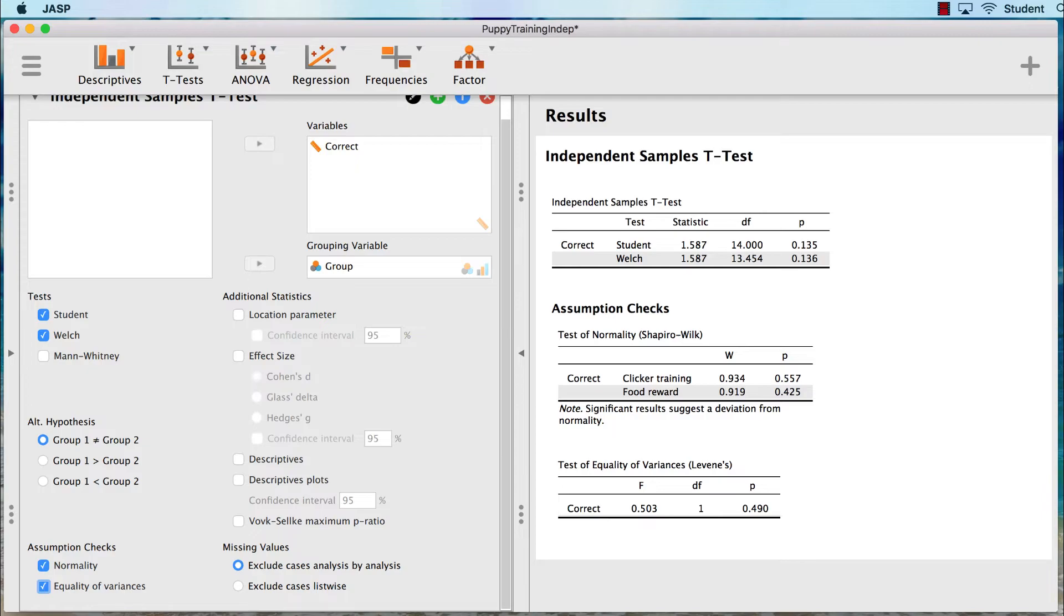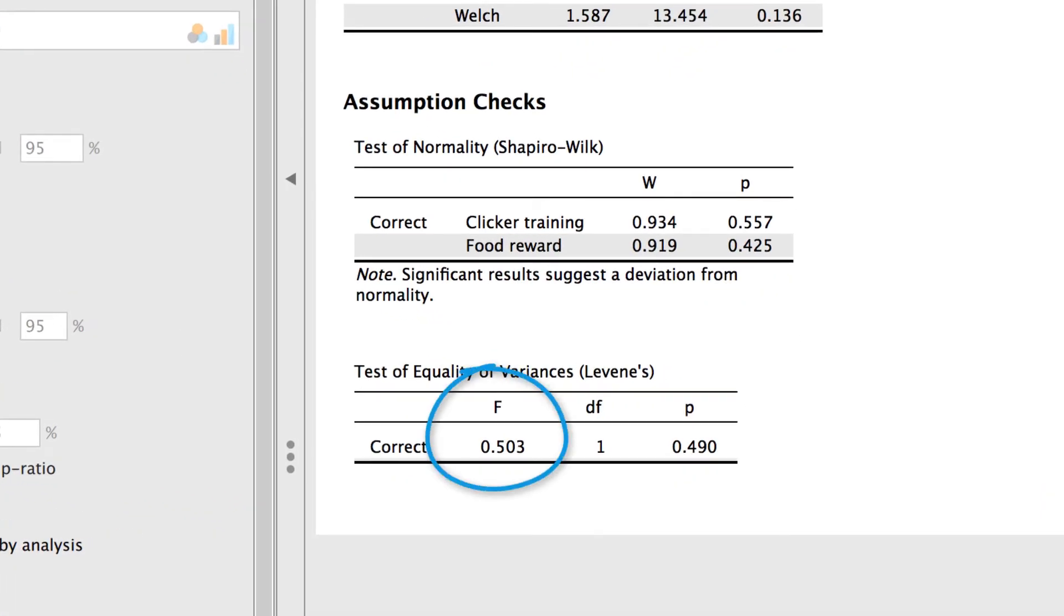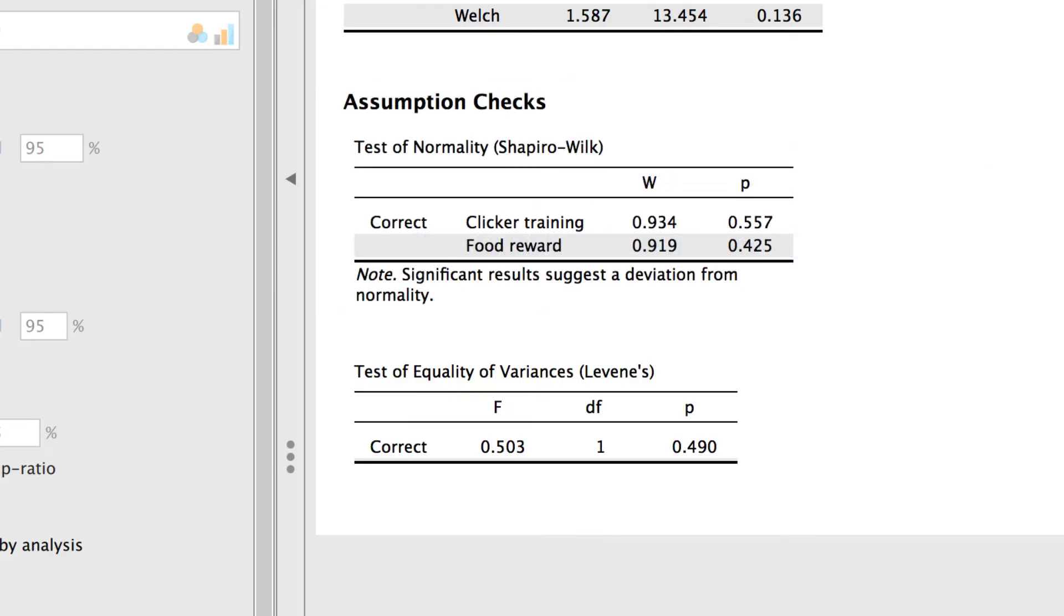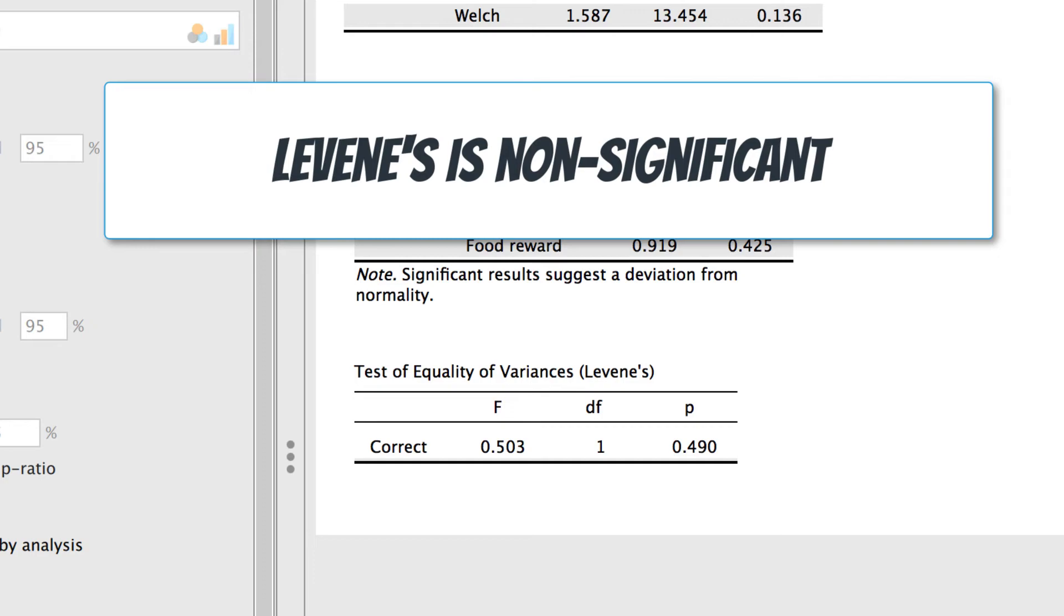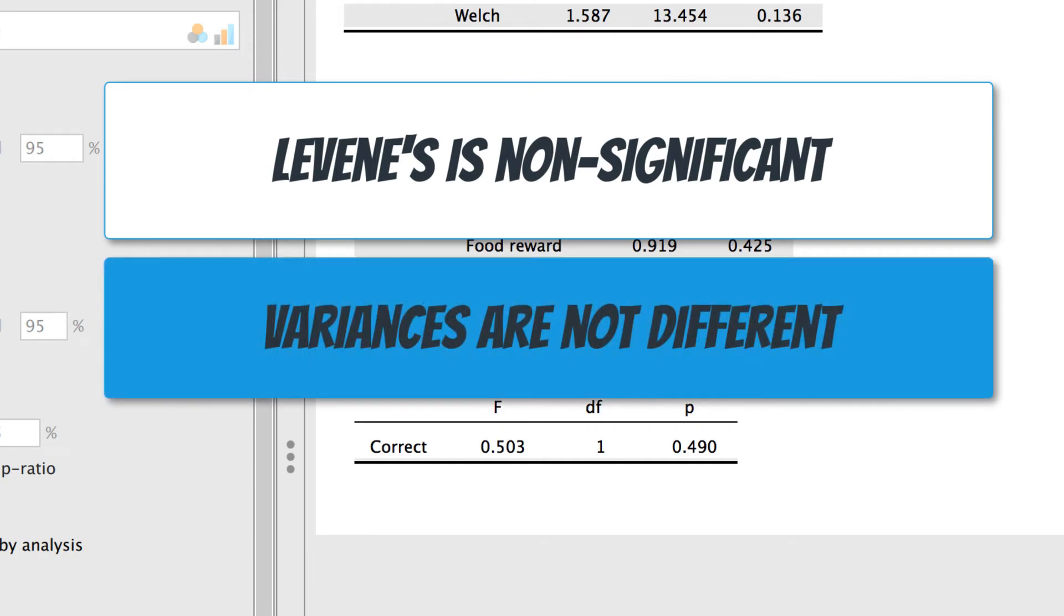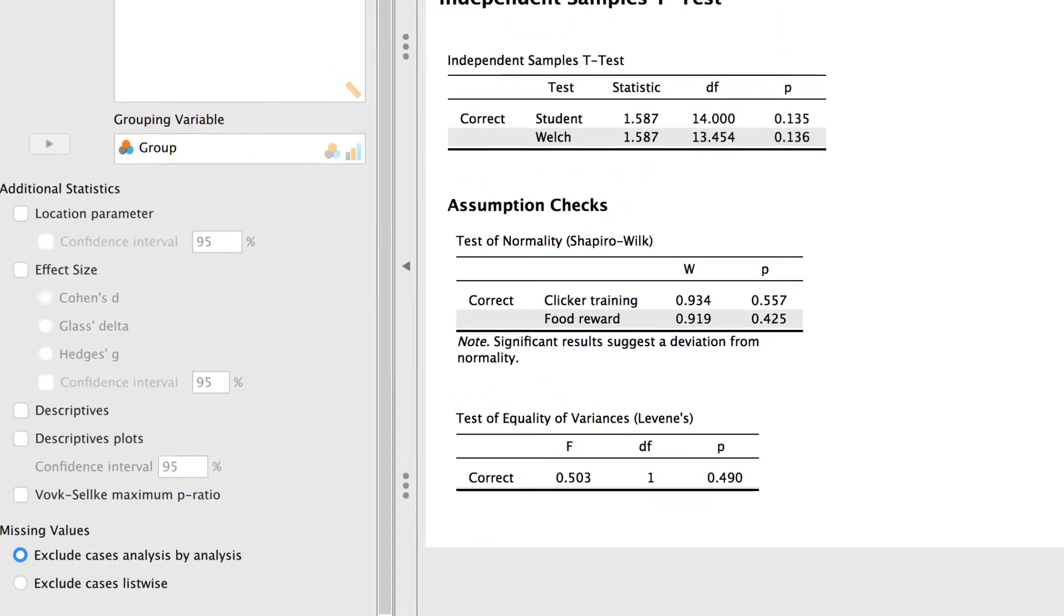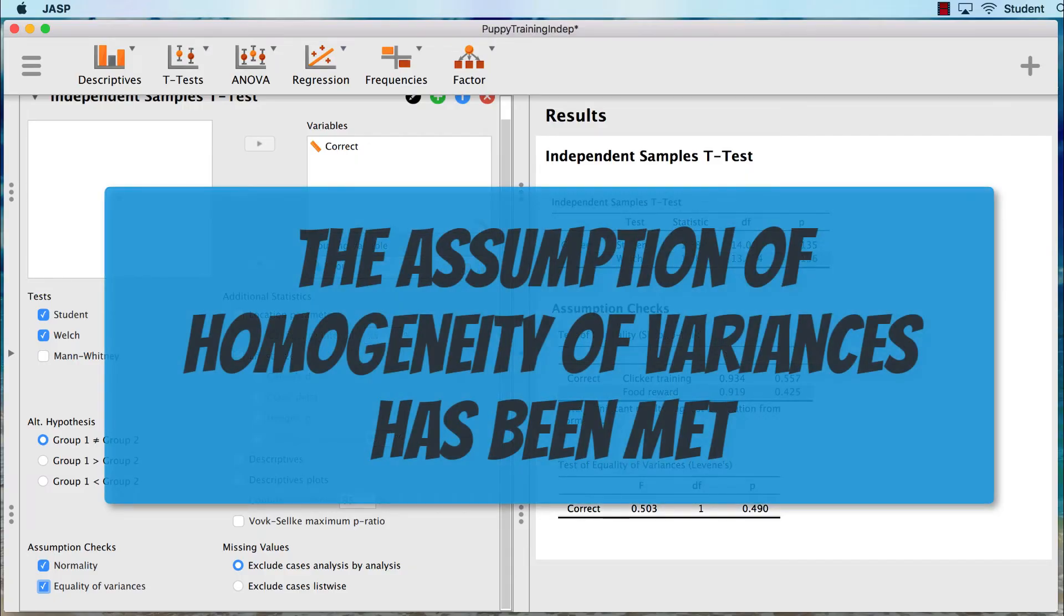We check in the results pane, and we see that Levene's F value is 0.503, and the probability associated with that F value is 0.49. Using the analogy of a dollar, this significance value is 49 cents, and that is not less than a nickel .05. So is Levene's test significant, p less than 0.05, or not? This Levene's test is not significant. The variances are not statistically significantly different, so the variances can be assumed to be equal, or close enough to equal. The assumption of homogeneity of variances has been met.